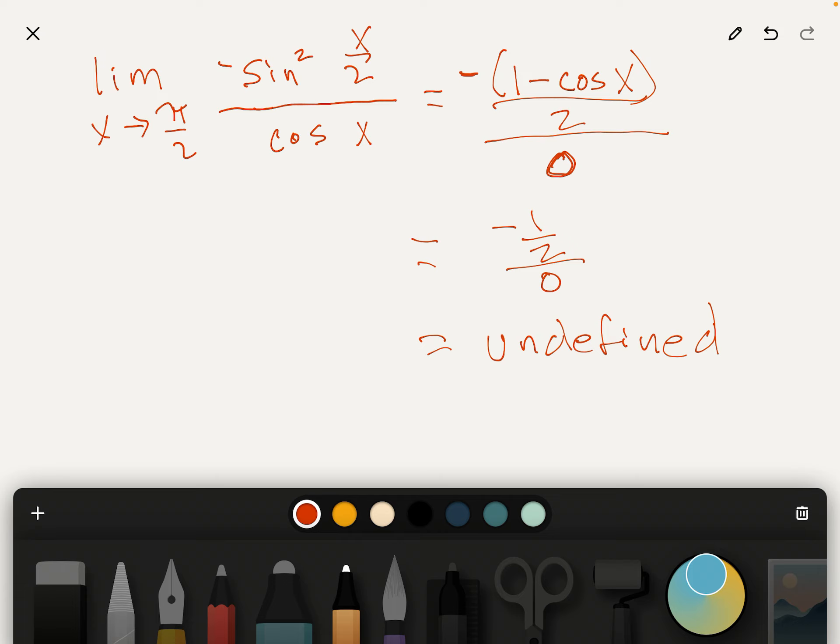But I don't see any other possible answers to those two examples, so I think they're both undefined. Or again, you could say negative infinity—the limit as x goes to π over 2 approaches negative infinity in both cases.